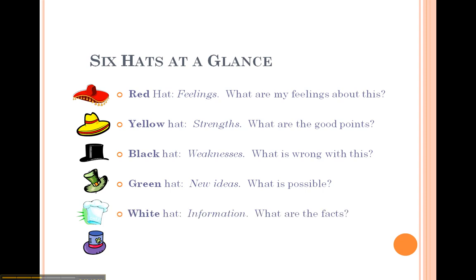White hat thinking is all about basic information and facts about the topic — the facts that you know, or the facts you might think you need to go and find out. Blue hat thinking is thinking about the thinking process itself: going back and checking, having an overview of what you've done as you've worked through the six hat process, and seeing if you might need to revisit any of those areas, or whether you think you've got everything you need.